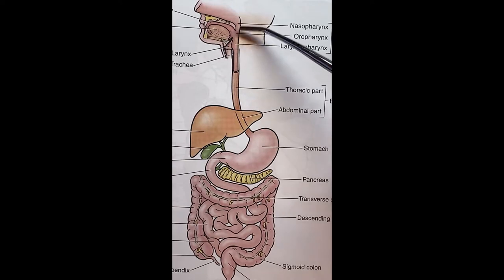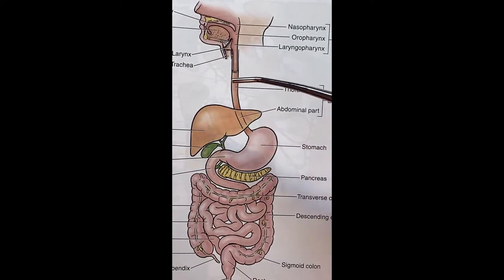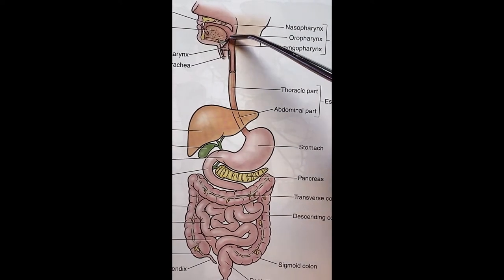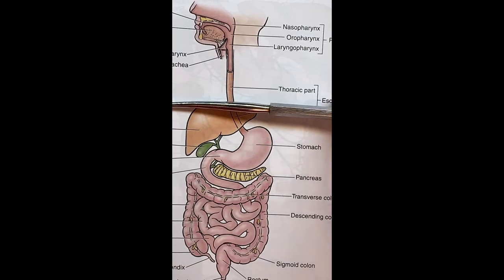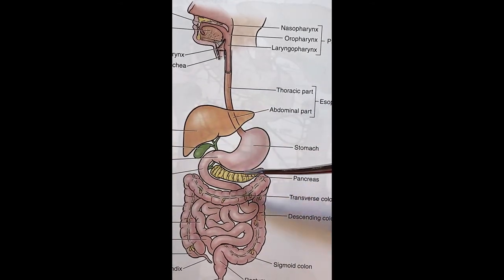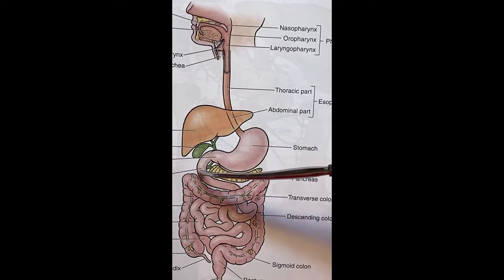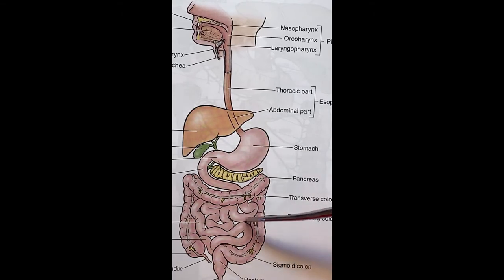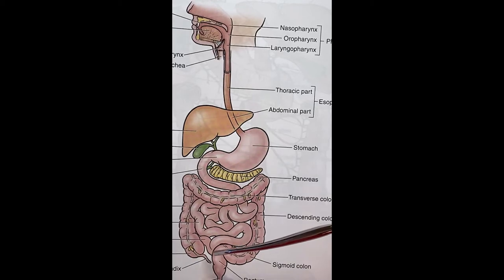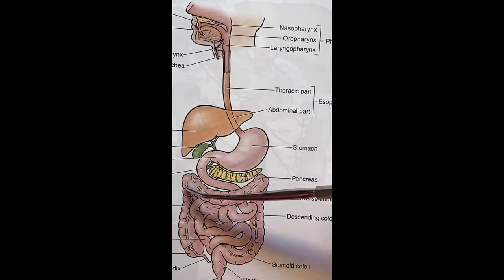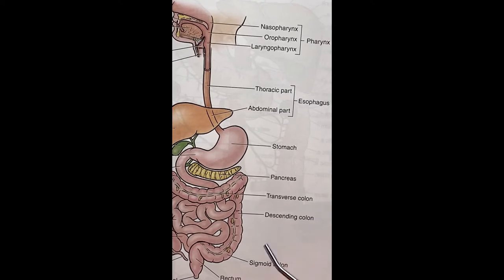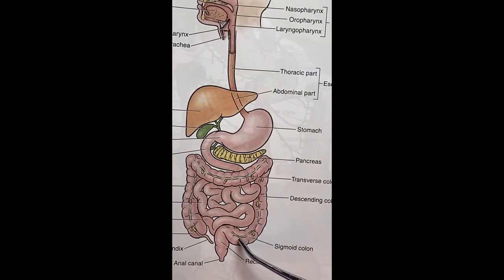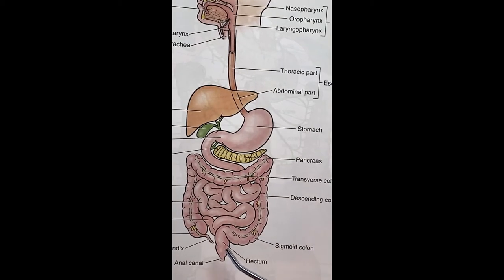Looking at this diagram, we're going to ignore the anterior tube — the trachea has been removed from this picture, so we're only seeing the esophagus. The esophagus goes down and passes through the diaphragm, then goes past the liver and into the stomach. The stomach extends into the small intestine. This is the first part, the second part, and the third part, which then turns into the large intestine. In a human that's the ascending, transverse, and descending colon, which turns into the sigmoid colon, and then the rectum and out the anus.